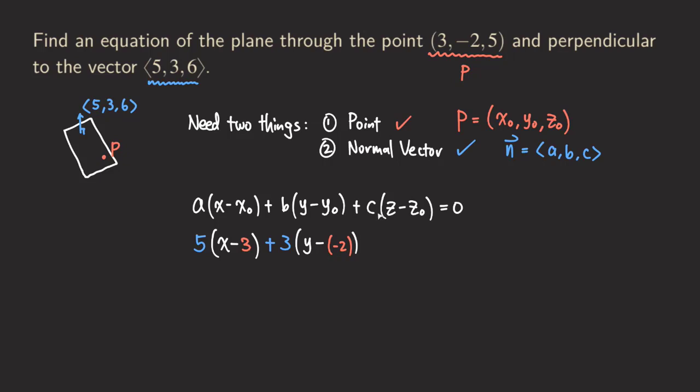And then the next one is the c, the c is 6. So we get plus 6, and then z minus z₀, z₀ is 5. So we have the 5 over here.